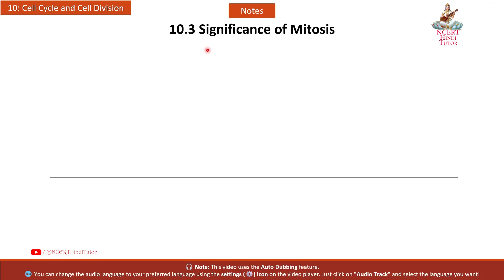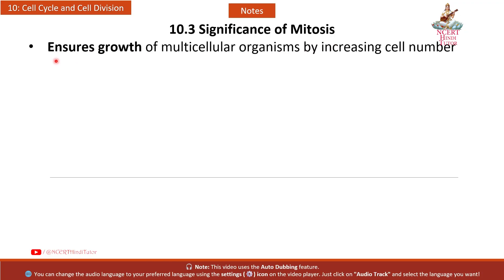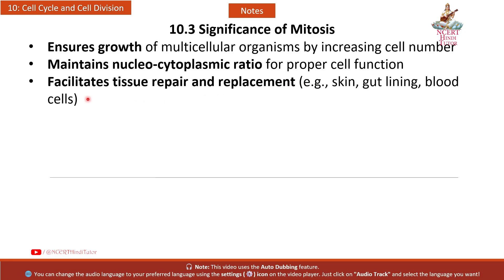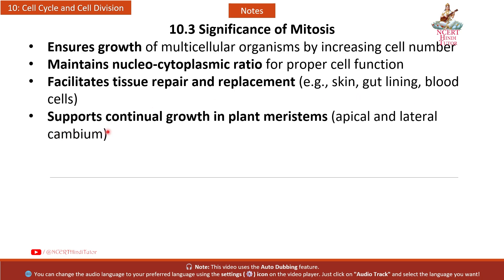10.3 Significance of Mitosis: Ensures growth of multicellular organisms by increasing cell number. Maintains nucleo-cytoplasmic ratio for proper cell function. Facilitates tissue repair and replacement — for example, skin, gut lining, and blood cells. Supports continual growth in plant meristems, both apical and lateral cambium.